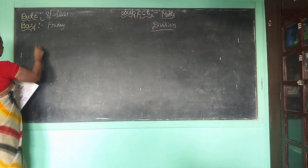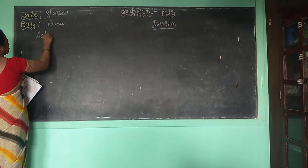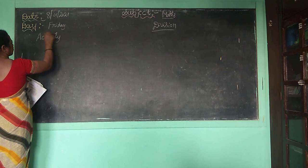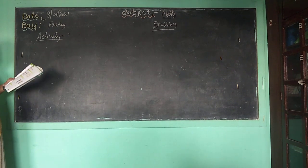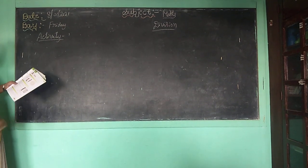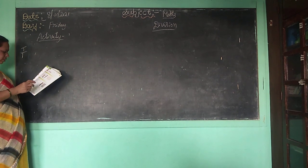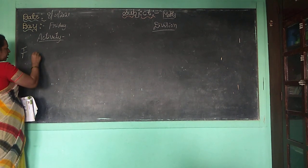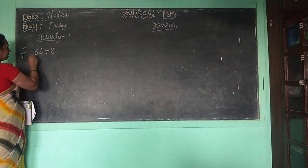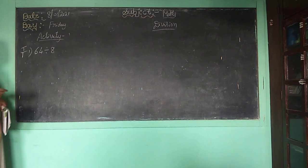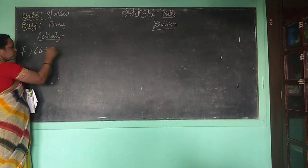Activity 1. Activity 1 is: divide using the multiplication table. They are given 64 divided by 8. You have to know the tables. You can do it using two methods also.